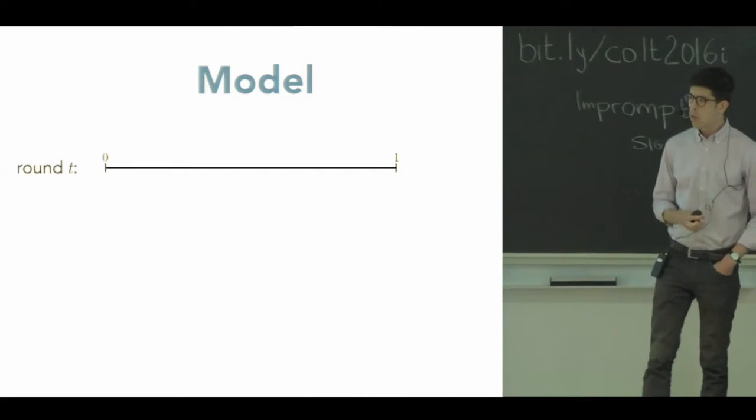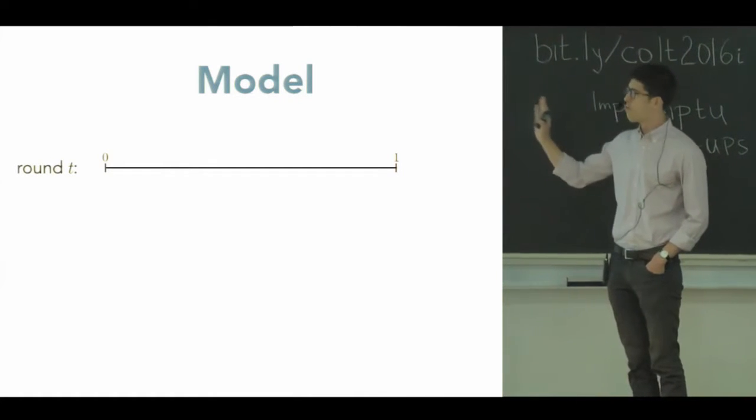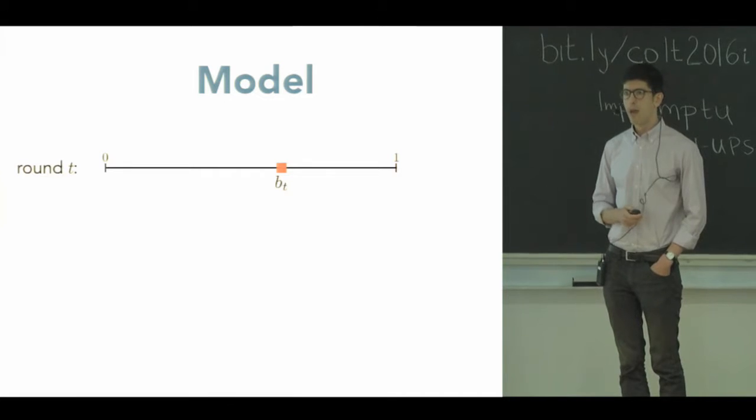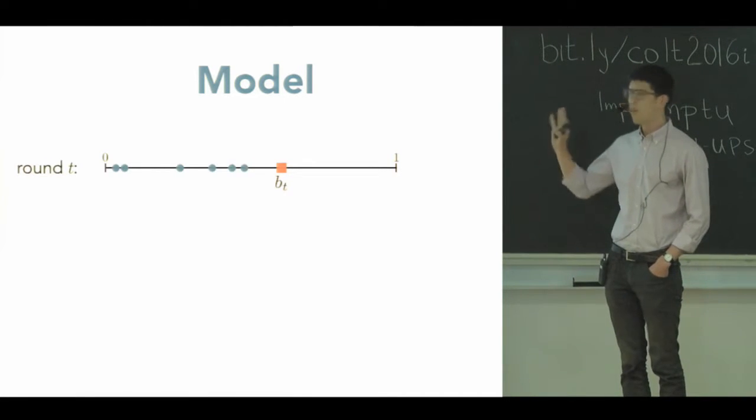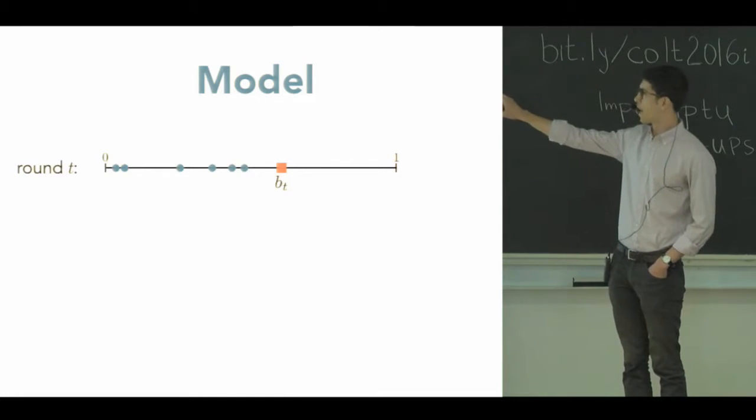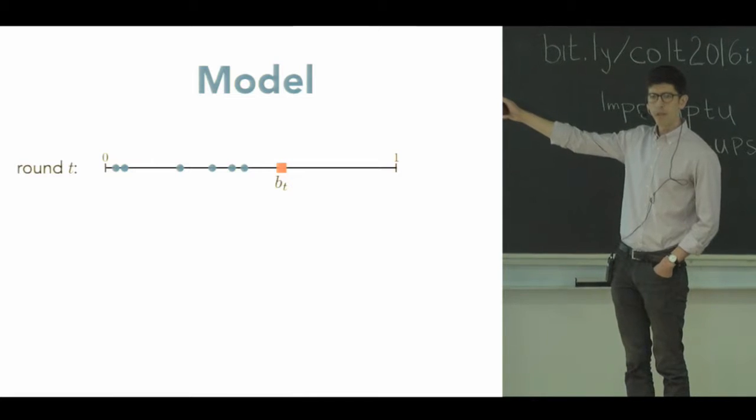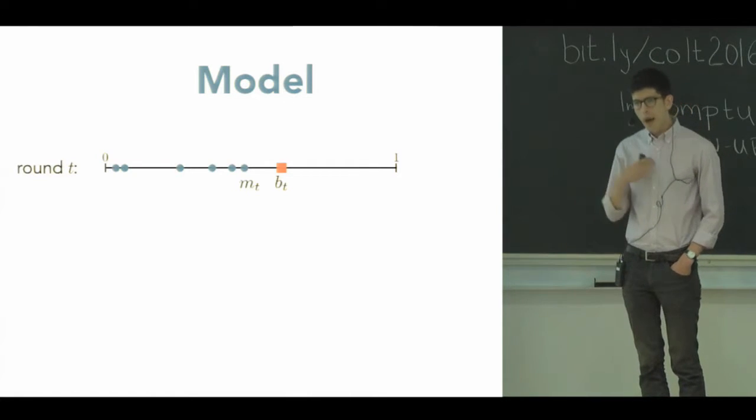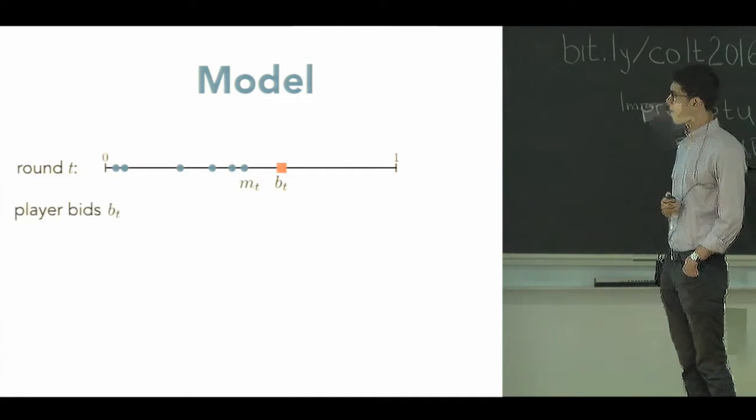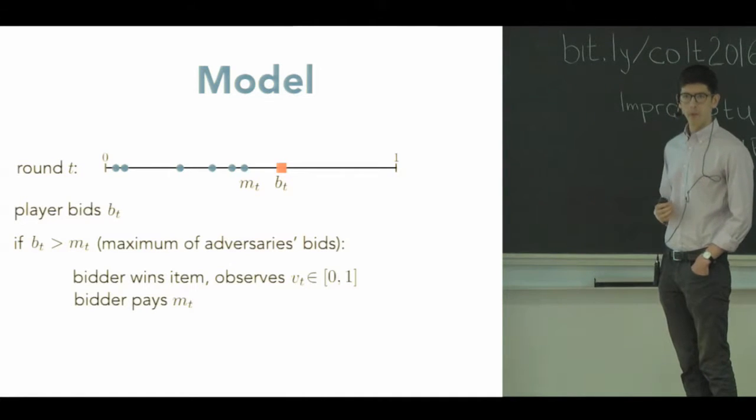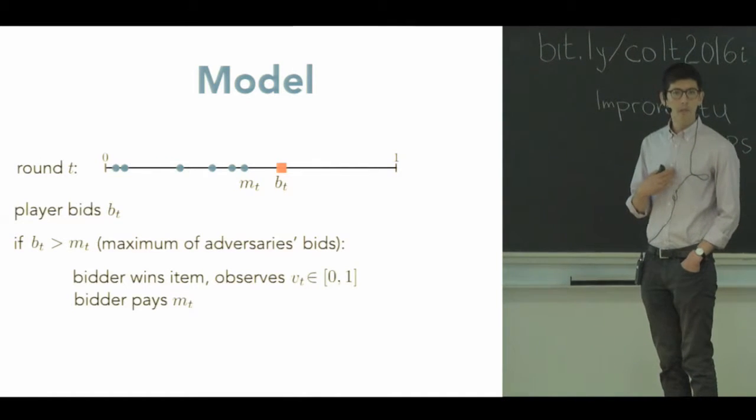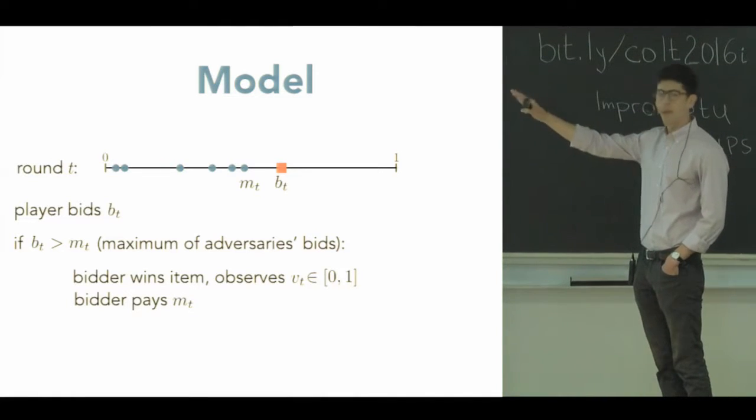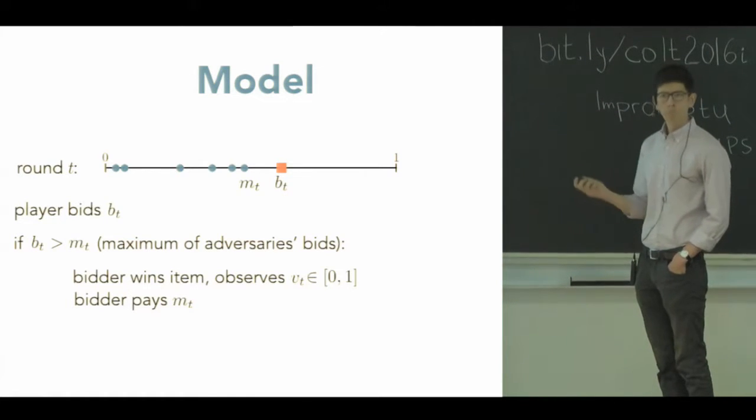So let's be a little bit more specific about the model. We imagine for convenience that all the bids are within the interval [0,1]. And here's what happens at round T. I, the bidder, submit a particular bid. This is how much I want to pay for the item. Simultaneously, a bunch of other bidders, whom I don't see, submit other bids. Now one easy observation is that really the only thing we ever need to care about is the maximum of the other bidders' bids. That's the person with whom I need to compete, who will set my price or who will beat me. So we'll call that M_T for convenience. So I submit B_T, the maximum of my adversary's bids is M_T. If I bid higher than the other person's bid, congratulations, I win the item. I get it, it has some value that I can then understand, and I observe this.